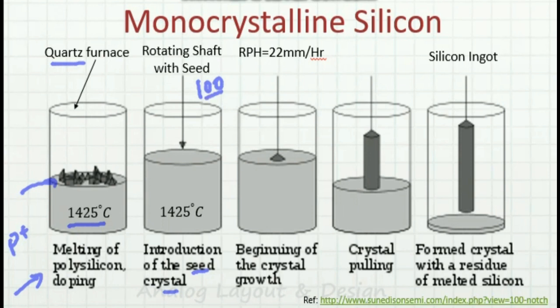For CMOS, I need the 1,0,0 crystal lattice. So I introduce a seed at the tip of a rotating shaft with the 1,0,0 orientation. Then I make this tip touch the molten material and start pulling it upward. The crystal starts forming as I pull it upward, and finally I get a silicon ingot, with some residual molten silicon remaining in the crucible of the furnace.